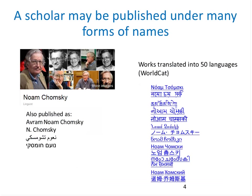Noam Chomsky is a scholar widely translated. WorldCat has records where he's worked in 50 languages, but only some of the forms of the name are represented as preferred forms in national authority files, shown on the left. The forms on the right are all from Wikidata, and only a few of them are even supported in national authority files. Most of the ones that are represented are represented in these scripts with romanizations only.